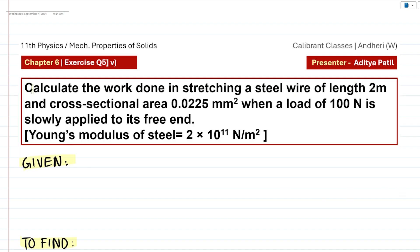Now the question says calculate the work done in stretching a steel wire of length 2 meters and whose cross-sectional area is 0.0225 mm² when a load of 100 N is slowly applied to the wire on its free end. The Young's modulus for the material steel is said to be 2 × 10¹¹ N/m².